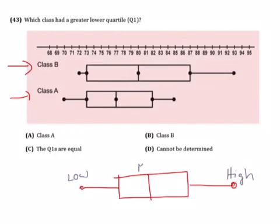The line in the middle is the median. The line on the left is quartile 1, the line on the right is quartile 3.